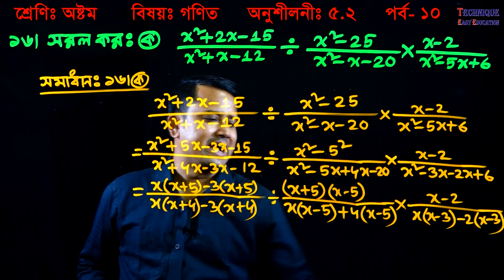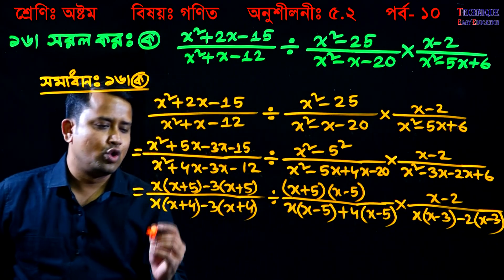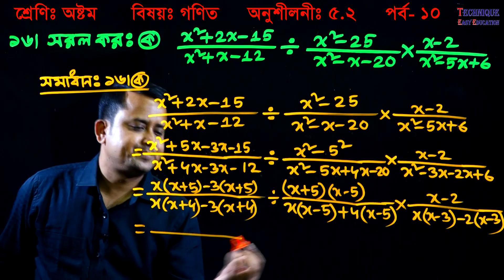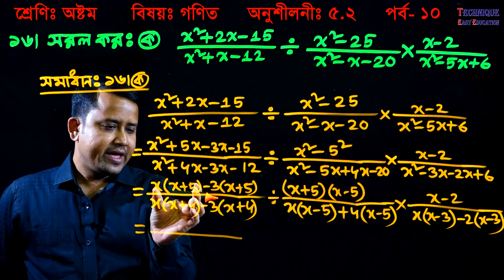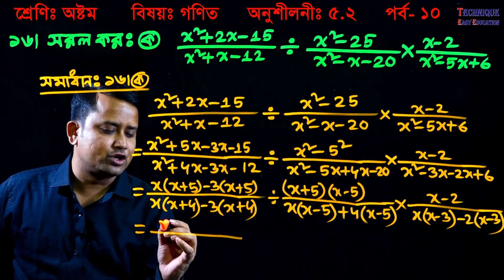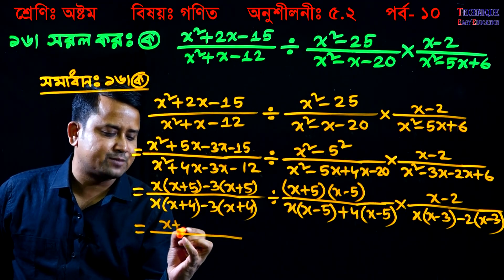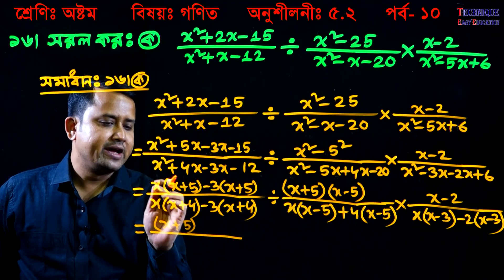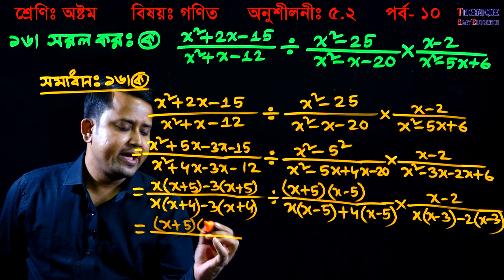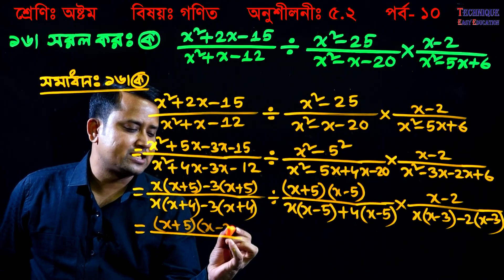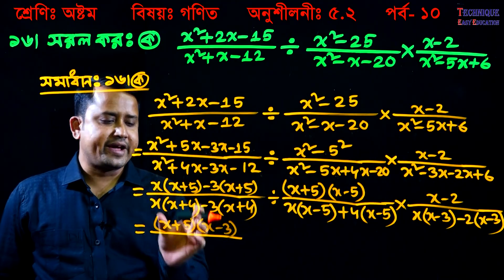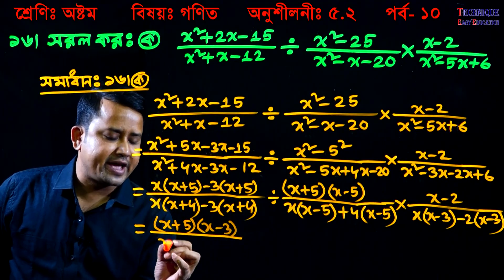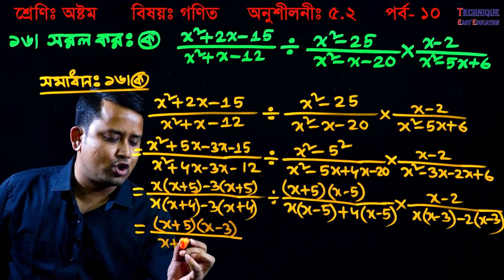Let's see how we write. Eta basically, x plus 5, we have x minus g. Eta, x plus 4, we have x minus g.